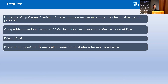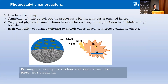We have conducted some experiments, but we still need to work on these nanoreactors because we need to understand the mechanism to maximize the chemical oxidation process. There are competitive reactions such as water generation, and hydrogen peroxide can sometimes undergo reversible redox reactions, especially at low pH (pH 3–4). We also need to study the effects of pH and temperature through plasmonic-induced photothermal processes.